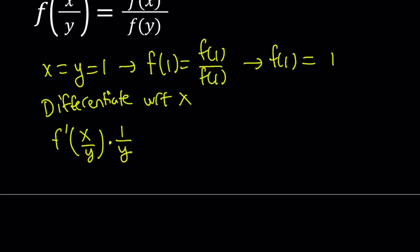In this case, the constant is 1 over y. When you differentiate it, it's just going to be 1 over y, the derivative of the inside, which comes from the chain rule.